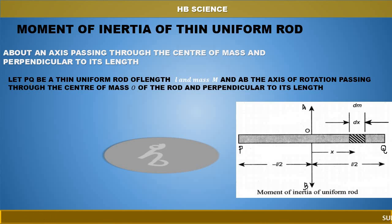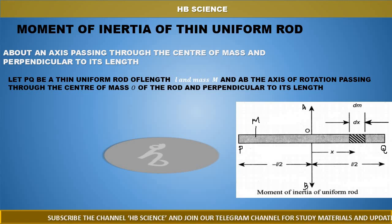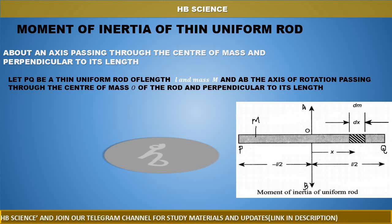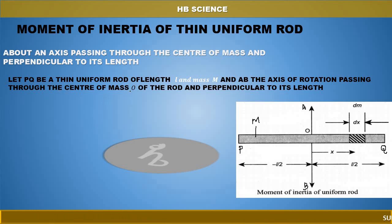Let PQ be a thin uniform rod of length L and total mass capital M. AB is the axis of rotation passing through the center of mass. The axis AB passes through the center of mass, and all the mass is considered in this object.